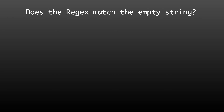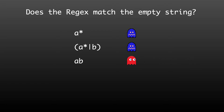Now that we've defined our regex data type, we can look at how to implement the nullable function. Let's look at some examples: A star matches the empty string since zero or more includes zero. A star OR B also matches the empty string since the left side of the OR matches it. AB does not match the empty string since it only matches the string AB. AB star also doesn't match, since it requires at least an A. A OR B does not match the empty string since neither side does.